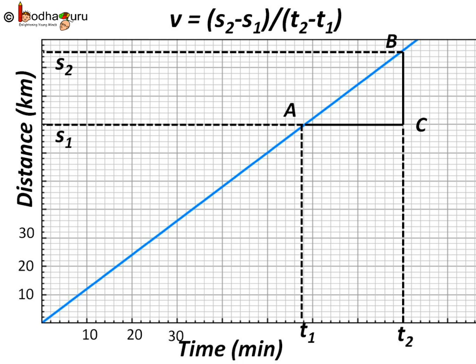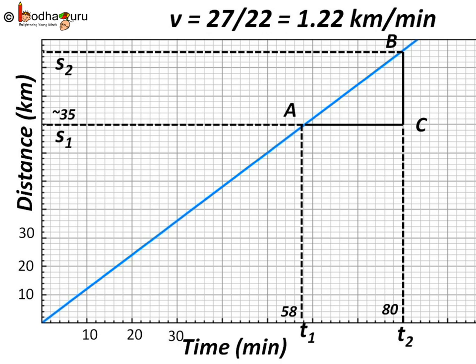Now let's read the real values from the graph. t2 is equal to 80, t1 is equal to 58. So t2 minus t1 equal to 80 minus 58 equal to 22 minutes. Same way s2 minus s1 equal to 96 minus 70, which is equal to 27 kilometers. So speed is equal to 27 by 22, which is equal to 1.22 kilometer per minute or in hours we multiply by 60. So speed is equal to 1.22 into 60 that is equal to 73 kilometer per hour.